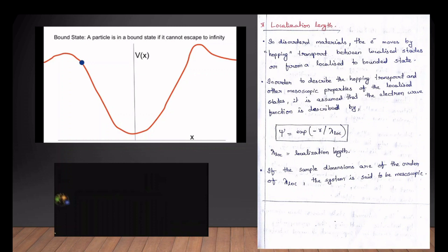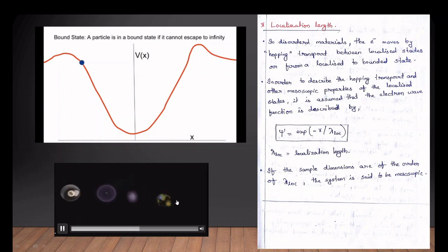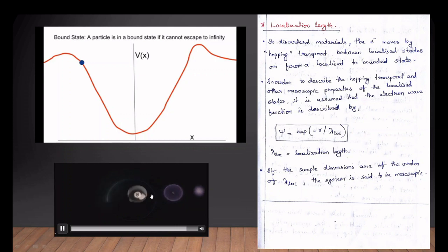We have two terms: hopping transport and localized state, and bounded state. Electrons are wave-particle in nature. So electrons are hopping — this is the bounded state.